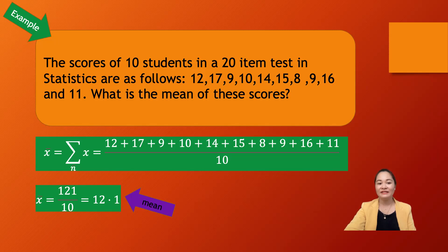We add 12 plus 17 plus 9 plus 10 plus 14 plus 15 plus 8 plus 9 plus 16 plus 11, divided by 10. So x-bar equals 121 divided by 10, which gives us 12.1. The mean of the 10 students' test scores in statistics is 12.1.